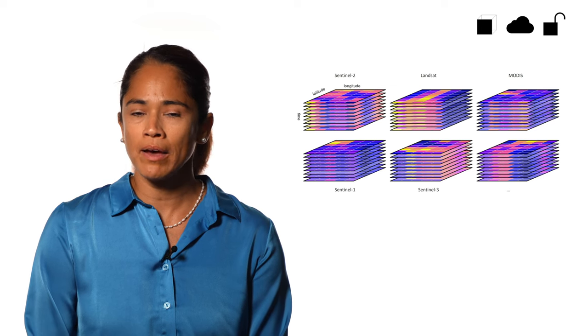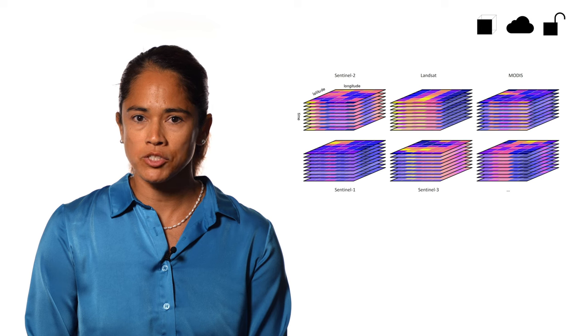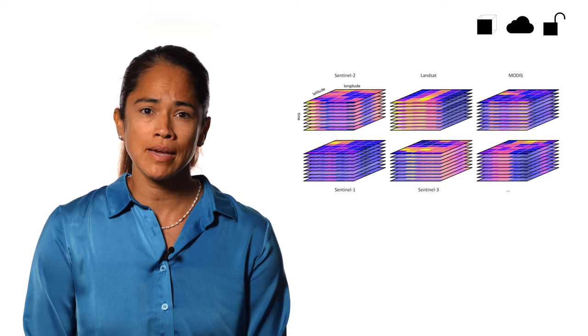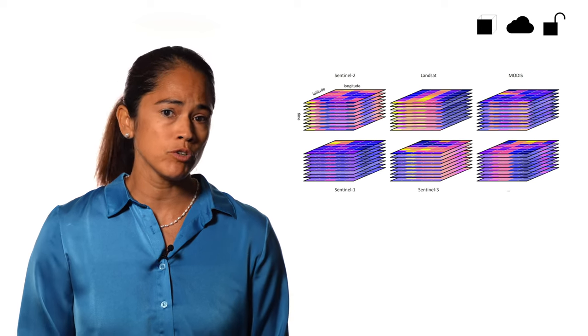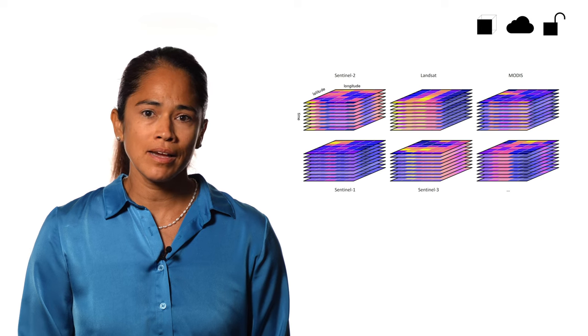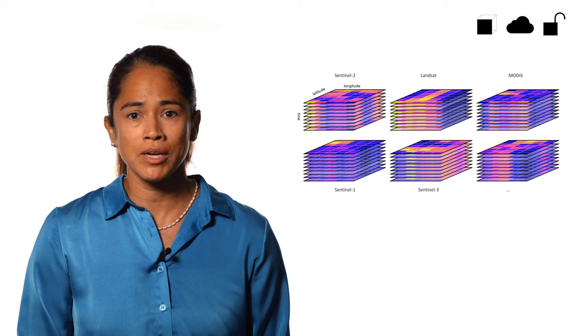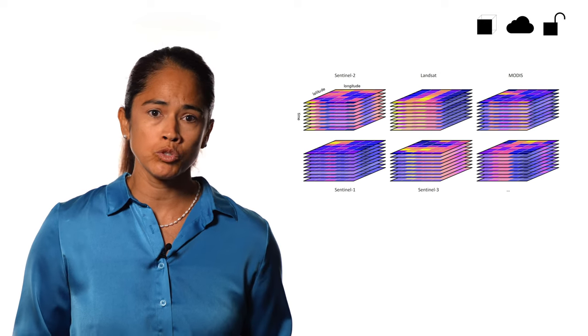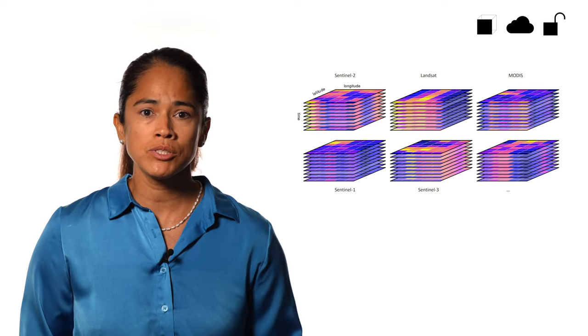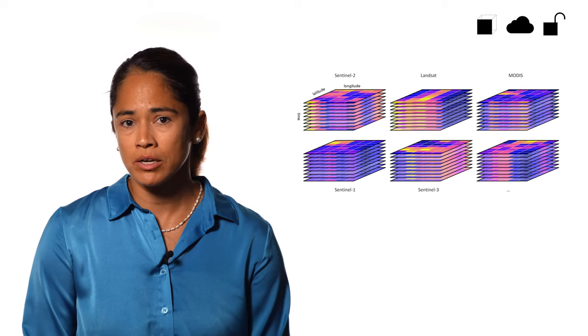DataCubes on EO platforms facilitate this process dramatically by harmonizing how to access data from different sources. Every satellite's images can be organized in a DataCube with the associated metadata. Having cloud processing tools on the platform enables easy fusion of different products.